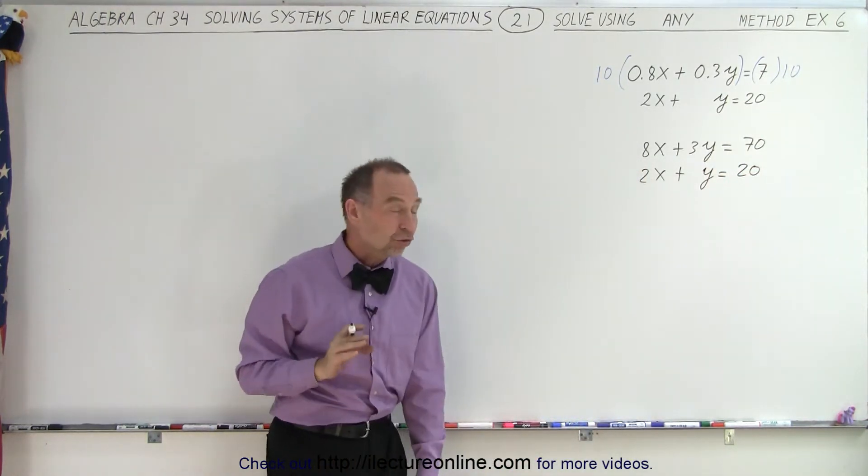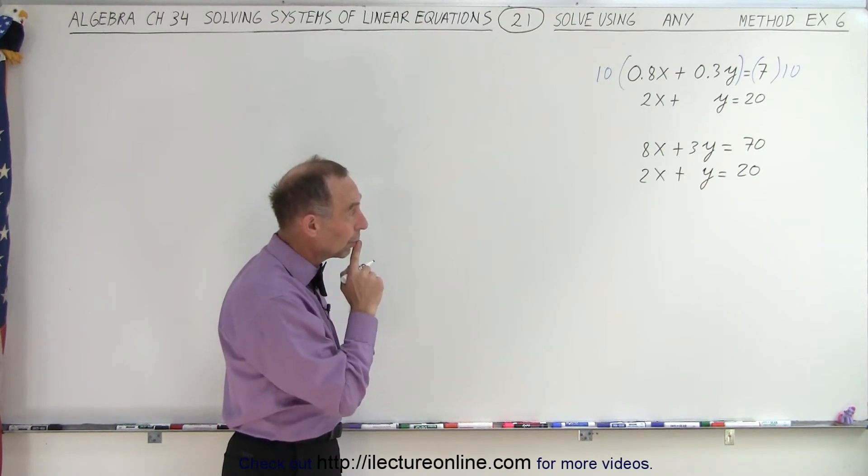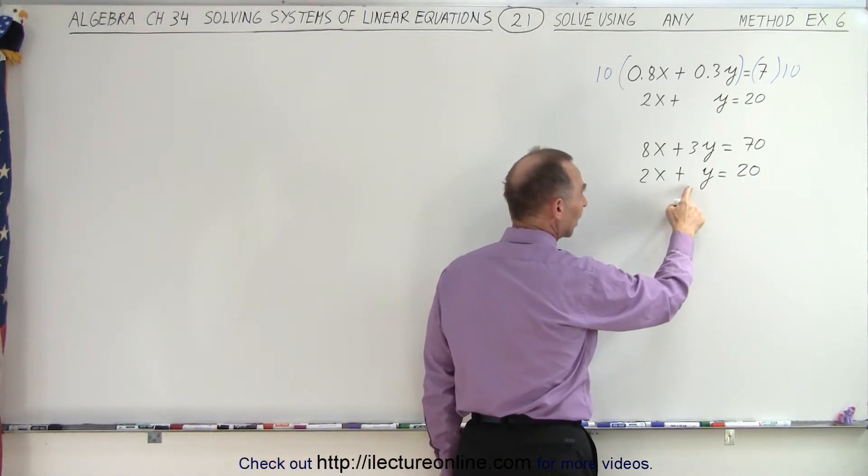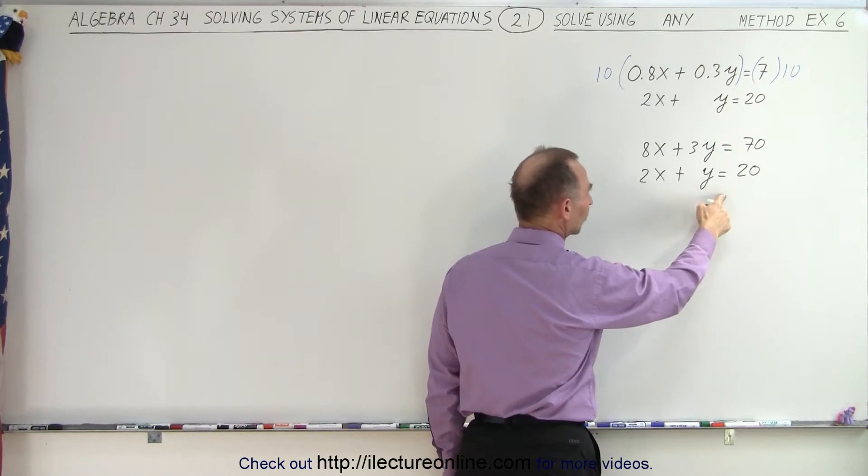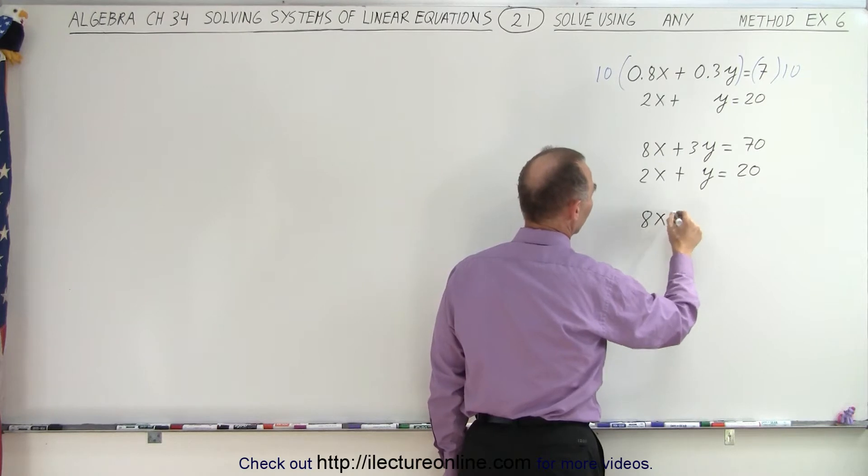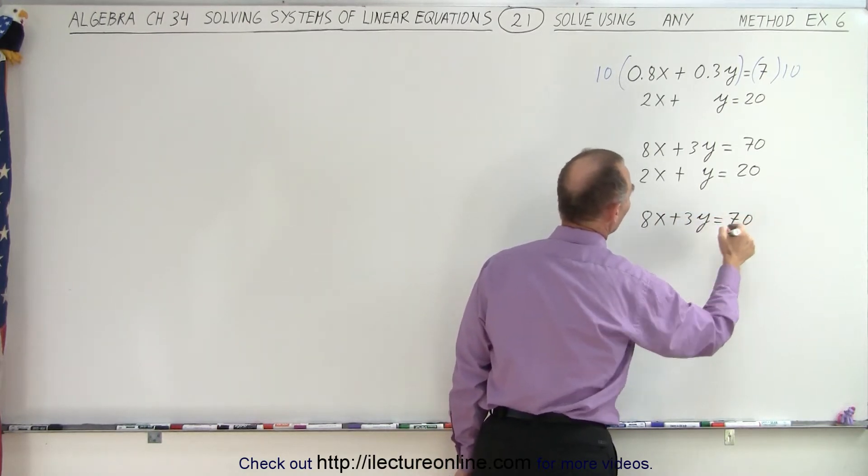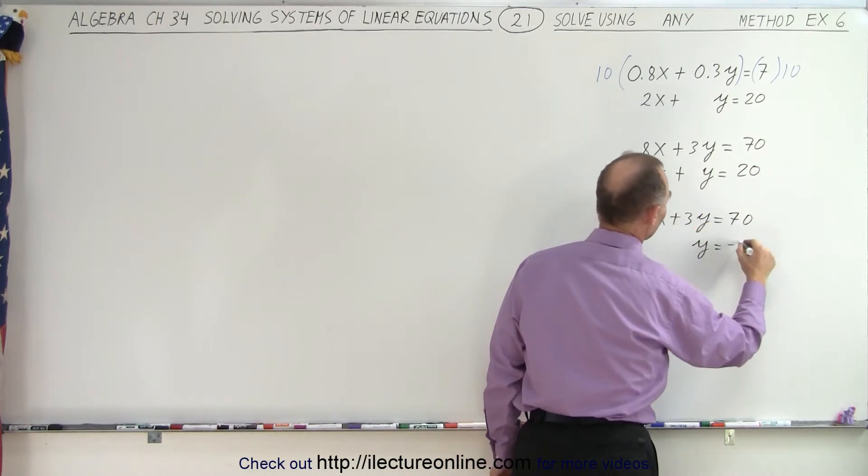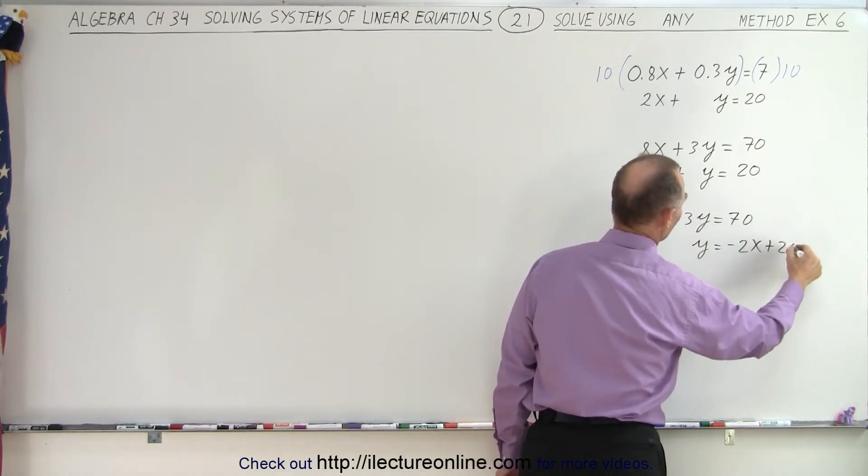Now here, when I try to strategize on how we can solve this, I take a look at the second equation and it looks like I can solve this for y in terms of x. In other words, I can write this as follows. I can say 8x plus 3y equals 70 for the top equation. But the bottom equation can become y equals minus 2x plus 20.